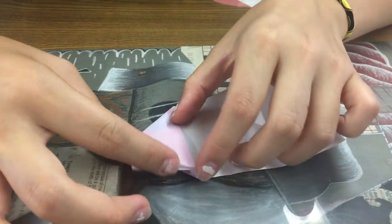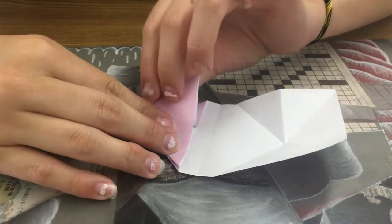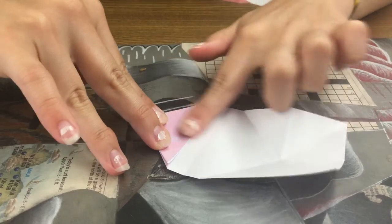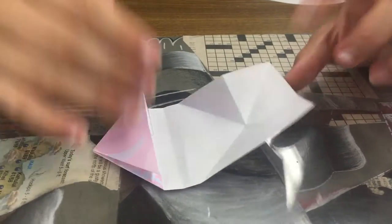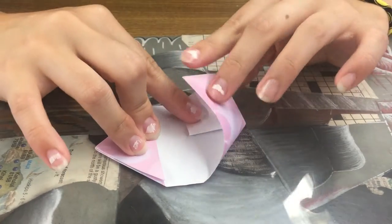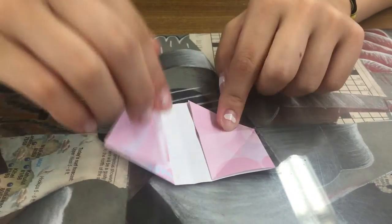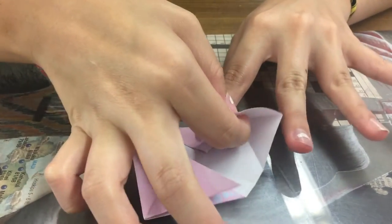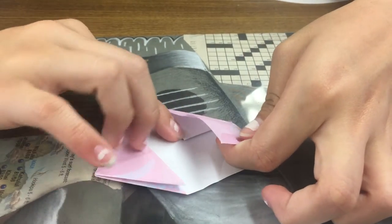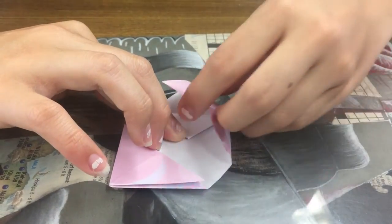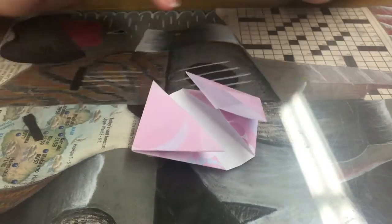And then once you have your trapezoid you fold on this crease right here by opening this flap and folding it over this way. You get a nice looking triangle with flaps on both sides. So you're going to do that again on the other side, make your trapezoid and fold on this crease by opening this flap.